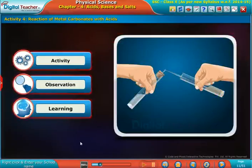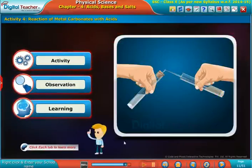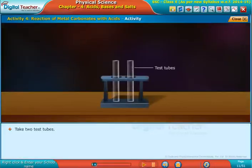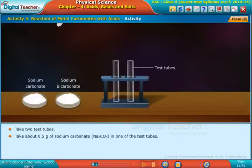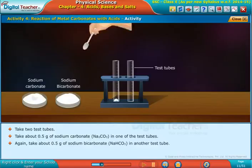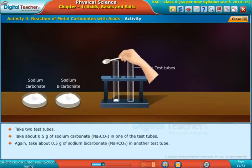Take two test tubes. Take about 0.5 grams of sodium carbonate (Na2CO3) in one test tube. Again, take about 0.5 grams of sodium bicarbonate (NaHCO3) in another test tube.